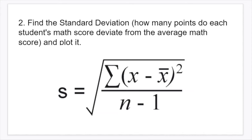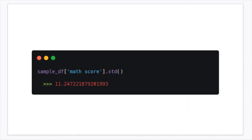Now the next thing is to find the standard deviation. What does this mean in context? It means how many points does each student's math score deviate from the average math score, and then we have to plot it. The way we do that with pandas is super simple — way simpler than doing it manually. Again, targeting the column you want, that's sample data frame math score, then apply the dot std method, which stands for standard deviation. It gives you a long number which we round to four decimal places — that's 11.2472 points. This means that each student's math score deviates 11.2472 points from the average math score of 77.5 points.